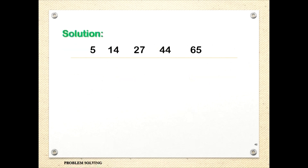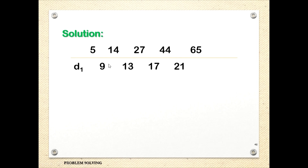For letter A, we compute the first differences, d-sub-1. 14 minus 5 is 9. 27 minus 14 is 13. 44 minus 27 is 17. And 65 minus 44 is 21. So all of these are the first differences.